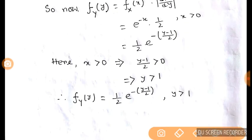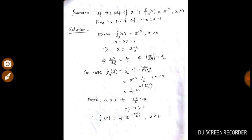Finally, the PDF f_Y(y) = (1/2)e^(-(Y-1)/2), and the range is Y greater than 1. This is the complete solution of the probability density function.